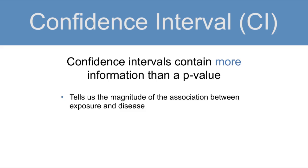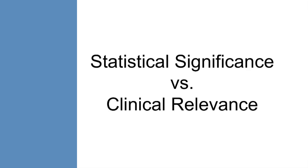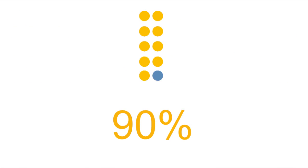Confidence intervals contain more information than a p-value. A confidence interval also tells us the magnitude of the association between the exposure and the disease, and it tells us about the precision of the estimate we obtained — the narrower the confidence interval, the more precise the estimate. A clear distinction must be made between statistical significance and clinical relevance. The same numerical result may be statistically significant with a large sample size and not significant with a smaller sample size. However, study results of clinical relevance are not automatically unimportant just because there is no statistical significance.